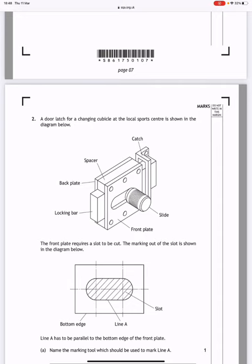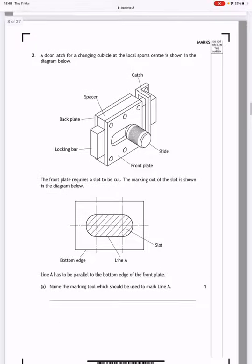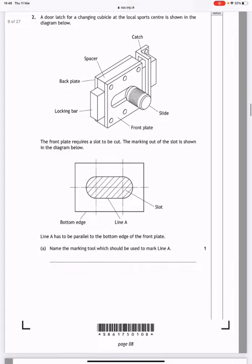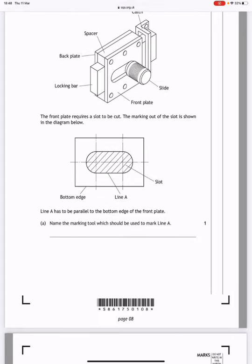A door latch for a changing cubicle at the local sports centre is shown in the diagram below. The front plate requires a slot to be cut. Line A has to be parallel to the bottom edge of the front plate. Name the marking tool which would be used to mark line A. Well, they would accept an engineer square or possibly odd leg calipers.